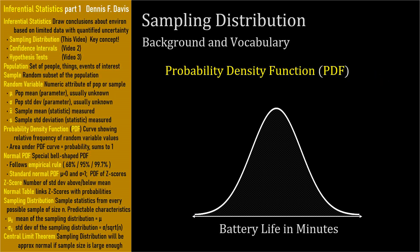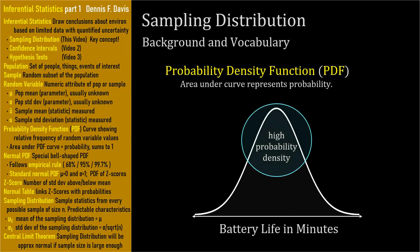The term probability density refers to common values having higher values on the curve. The area under the curve corresponds to the probability of observing the associated random variable values — probabilities are dense where values are more likely, and less dense where values are less likely. So when we say PDF, distribution, or curve, we're referring to this concept.